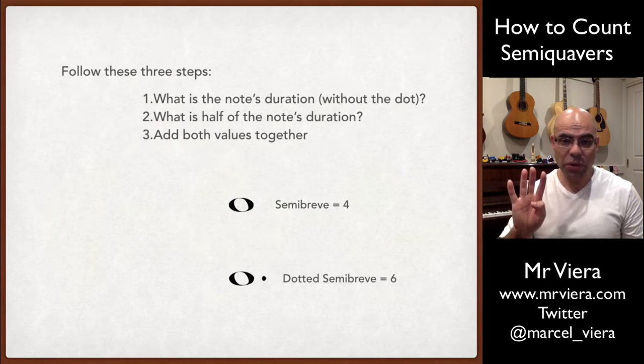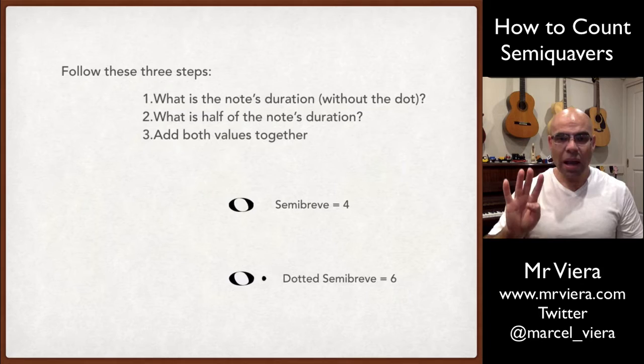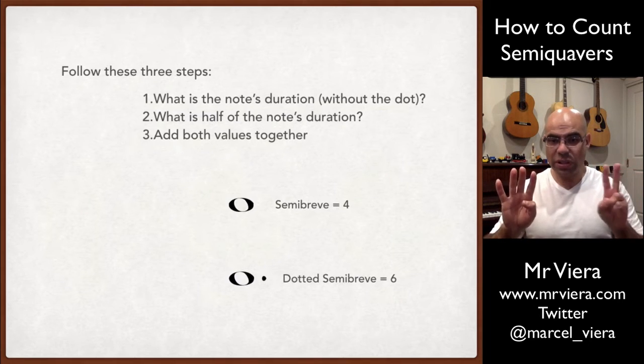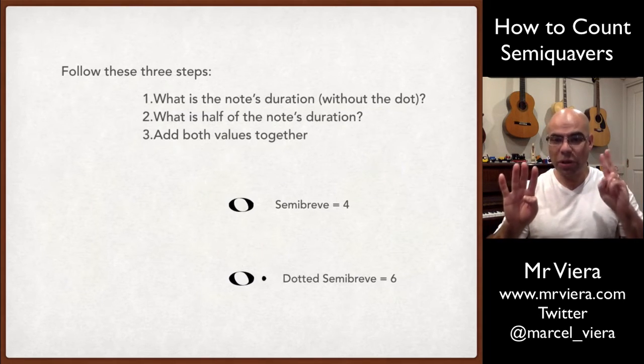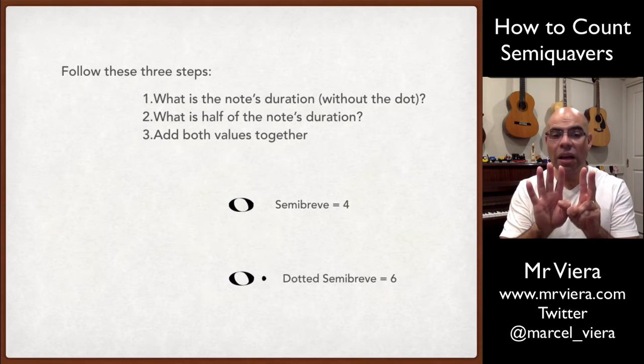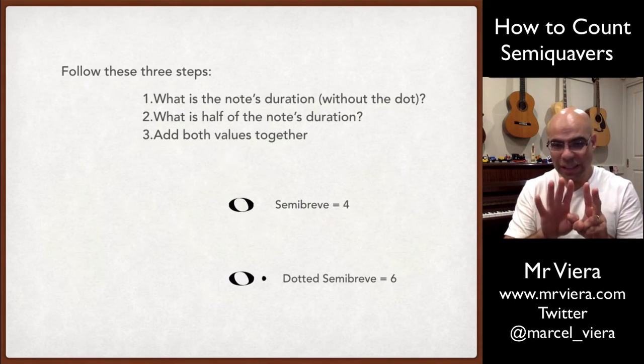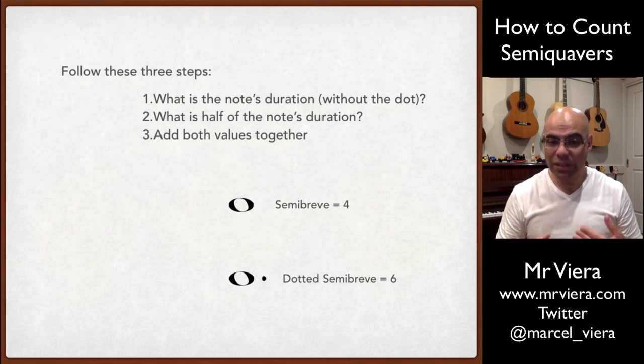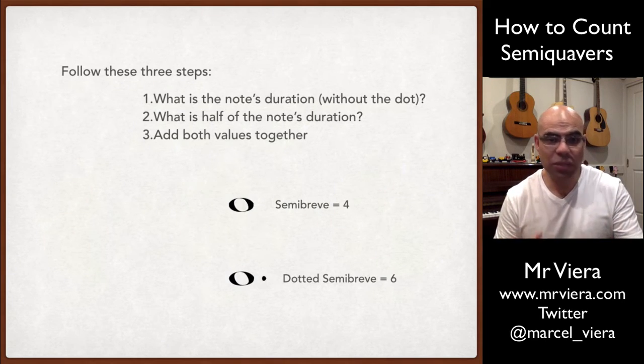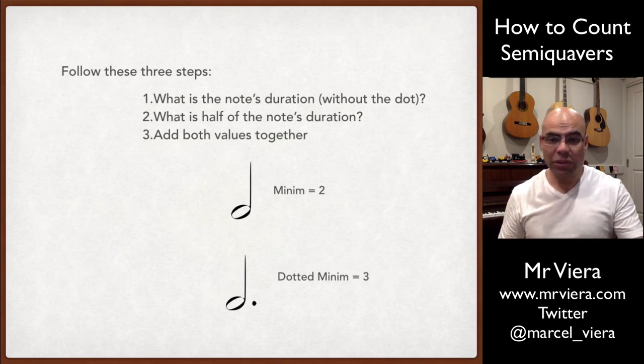If you get a semibreve, which is worth four counts, and you divide it by two, so four divided by two is two. And then step three is add them together. Four plus two equals six. And our dotted semibreve is our symbol for something that is worth six counts.